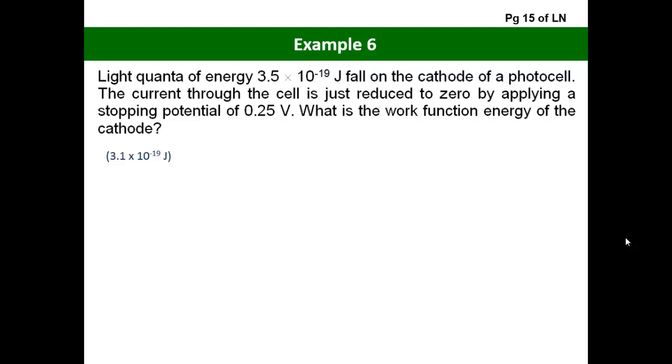The first thing we are given is the energy of the photon falling on the cell. So E equals HF, and we're told it's 3.5 × 10^-19. Reading through the question, we're also told the stopping potential is 0.25 volts. For this question, we are interested to find the work function of the cathode.